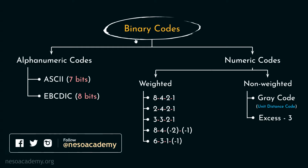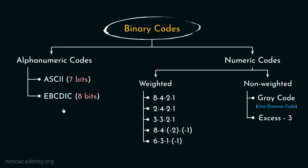Now in the previous session, when we saw the classification of the Binary Codes, we came to know that Binary Codes can be broadly classified into two different categories: Alphanumeric Codes and Numeric Codes. We also learnt about Alphanumeric Codes. Today we will first observe the 8421 Code, then the XS3 Code. Regarding the Gray Code, we will have a separate discussion altogether.